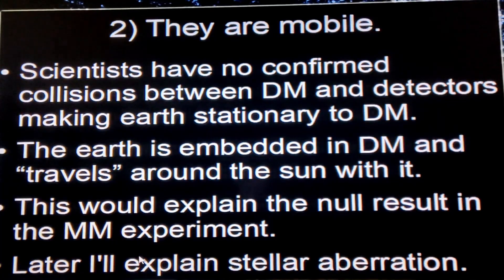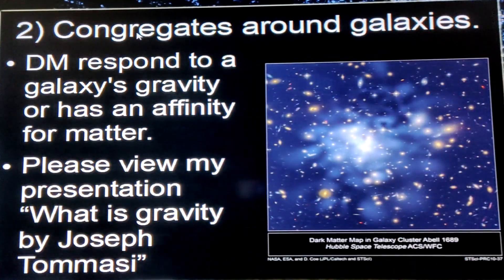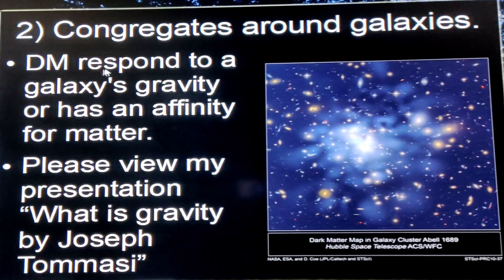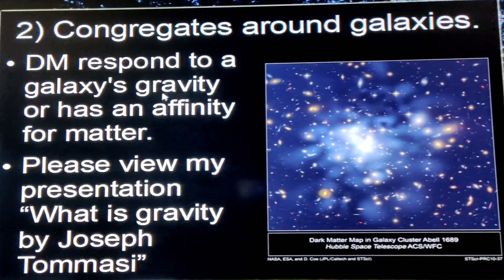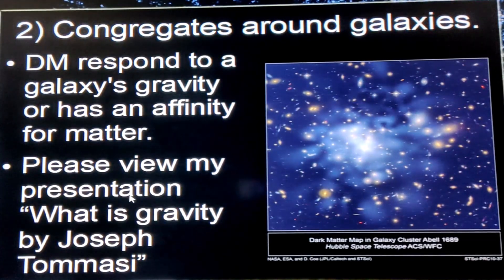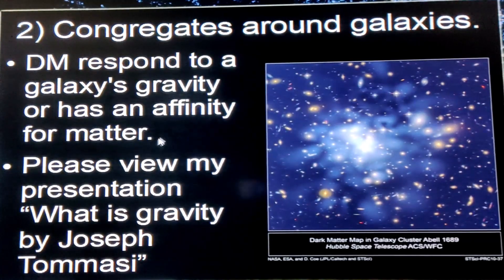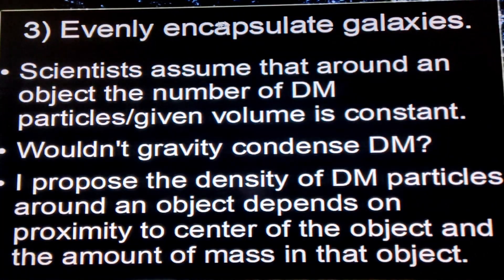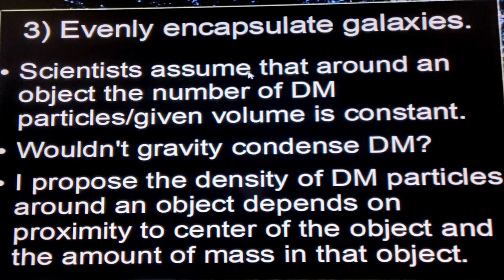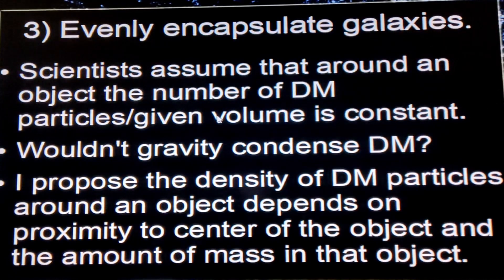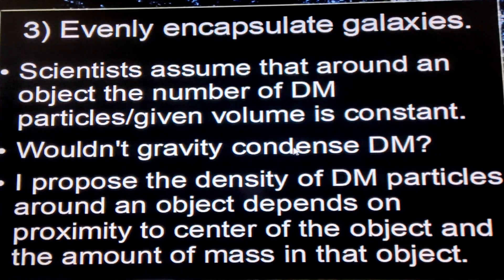I'll explain stellar aberration shortly. Dark matter congregates around a galaxy because it responds to the galaxy's gravity or affinity for matter. Scientists assume that around any object — a star, planet, or galaxy — the number of dark matter particles per given volume is constant; the density is uniform.